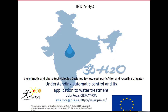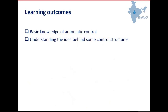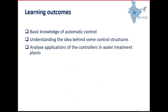I think this can be appropriate for students related to water treatment but without knowledge of automatic control. Control systems are described by differential equations, and mathematics is an important tool, which can make control design difficult to understand. The objective here is just to give general ideas and the application for water treatment, so I have avoided equations in this course. In this course, we are going to understand basic knowledge about automatic control, understand the ideas behind some control structures, and analyze applications of these controllers for water treatment systems.